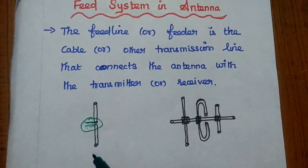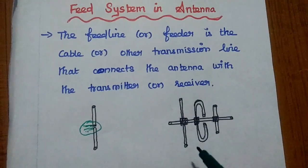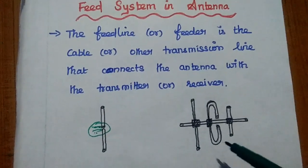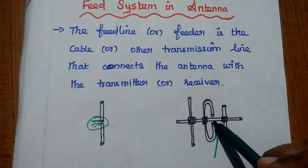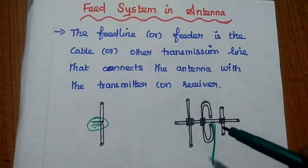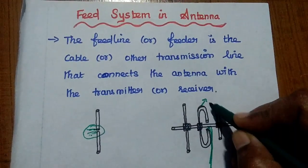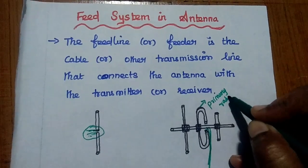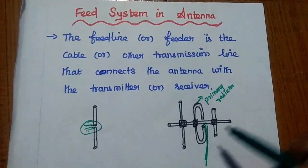In this dipole antenna, the coaxial cable is the feeder line. In this array system — array means a group of similar elements — we are giving input to this folded dipole antenna. The antenna to which we are giving input is called an active antenna or the primary radiator. The remaining elements are the secondary radiators.